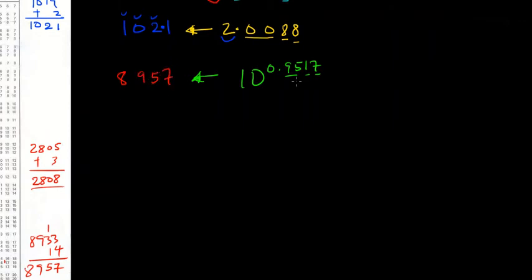So this is our number. The integer here is 0. Since the integer is 0, it means the number before the decimal point should just be 1. I'll just put my decimal point here — because only 1 digit should appear before the decimal point.